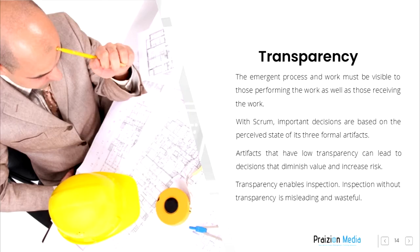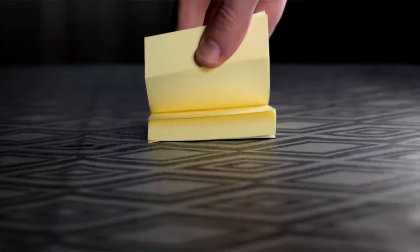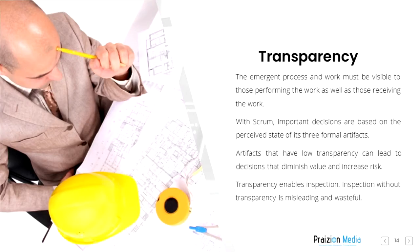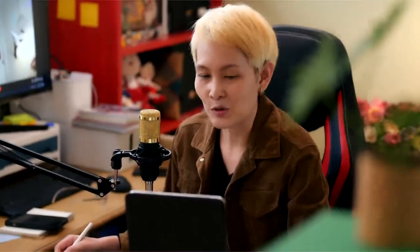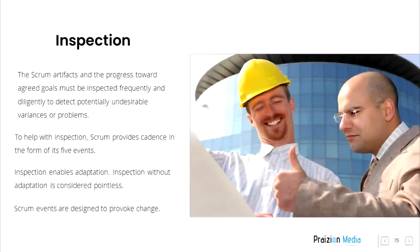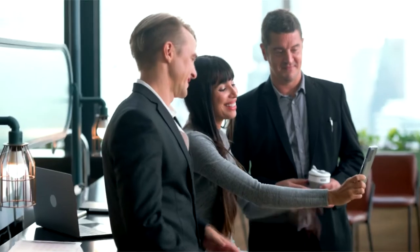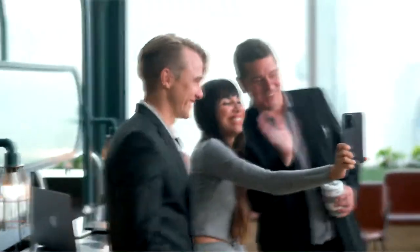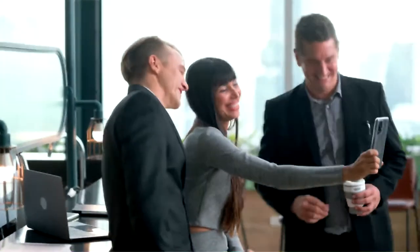Transparency. The emergent process and work must be visible to those performing the work as well as those receiving the work. With Scrum, important decisions are based on the perceived state of its three formal artifacts. Artifacts that have low transparency can lead to decisions that diminish value and increase risk. Inspection. The Scrum artifacts and the progress towards agreed goals must be inspected frequently and diligently to detect potential undesirable variances or problems. To help with inspection, Scrum provides cadence in the form of its five events. Inspection enables adaptation.